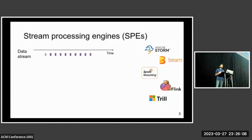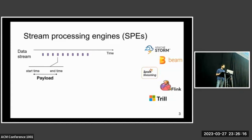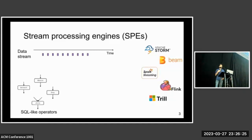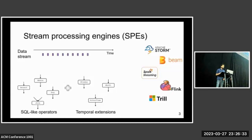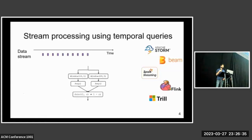Even though we have many different kinds of stream processing engines available in the community, many of these systems generally follow a common design pattern. For instance, the data stream is represented as an unbounded sequence of time-ordered events, each having a validity interval and a payload. This particular event is valid between 715 and 730 with a payload value of 32. Stream processing engines also provide SQL-like operators, along with temporal extensions like windowing or shift operations, and using these, users can write streaming analytics applications as temporal queries.